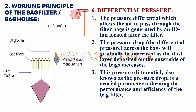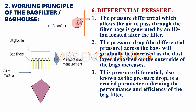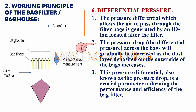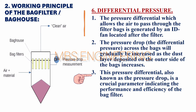Step 6 — Differential Pressure: The pressure differential which allows air to pass through the filter bags is generated by an ID fan located after the filter. The pressure drop across the bags gradually increases as the dust layer deposited on the outer side of the bags increases. This pressure differential, also known as the pressure drop, is a crucial parameter indicating the performance and efficiency of the bag filter.